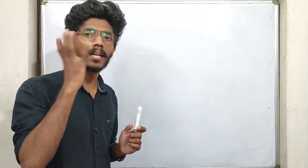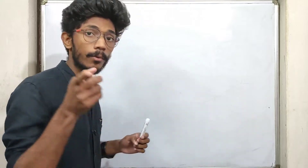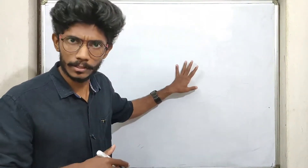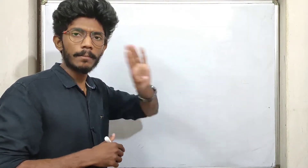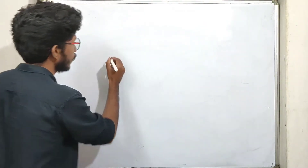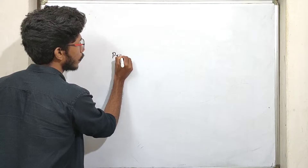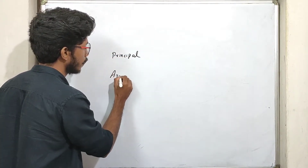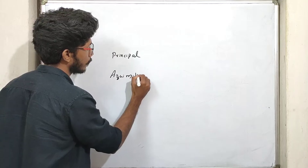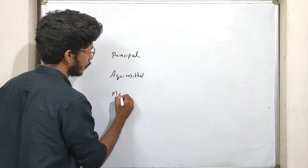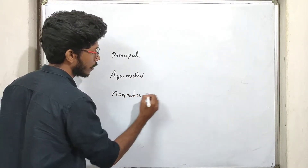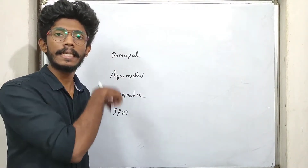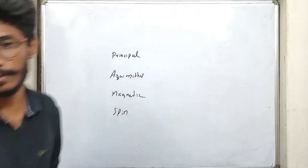The number of quantum numbers is 4 — you can see 4 different quantum numbers. If you choose the number of electrons, you can see different values between the electrons. The first one is the Principal Quantum Number, the second one is the Azimuthal Quantum Number, the third one is the Magnetic Quantum Number, and the fourth one is the Spin Quantum Number.